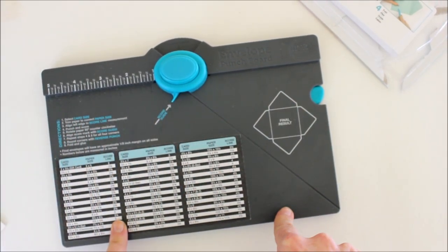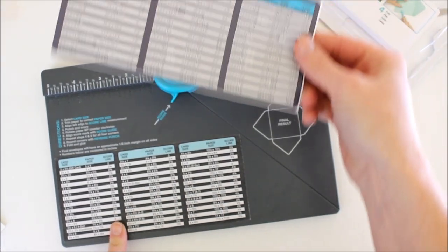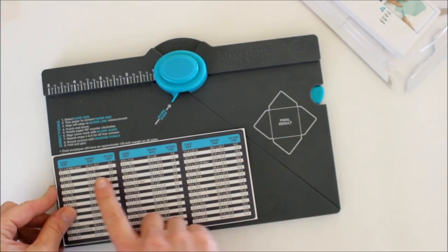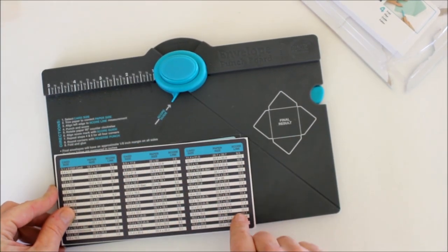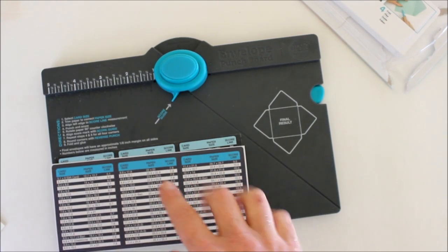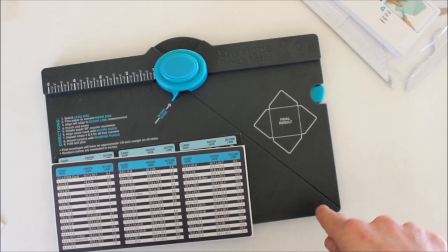So if you got the original envelope punch board with the incorrect markings, if you send them an email they will send you out one of these stickers that adheres right on top over the old measurements and it will be more accurate for you. Stay tuned because I'll have that email for you at the end of the video.